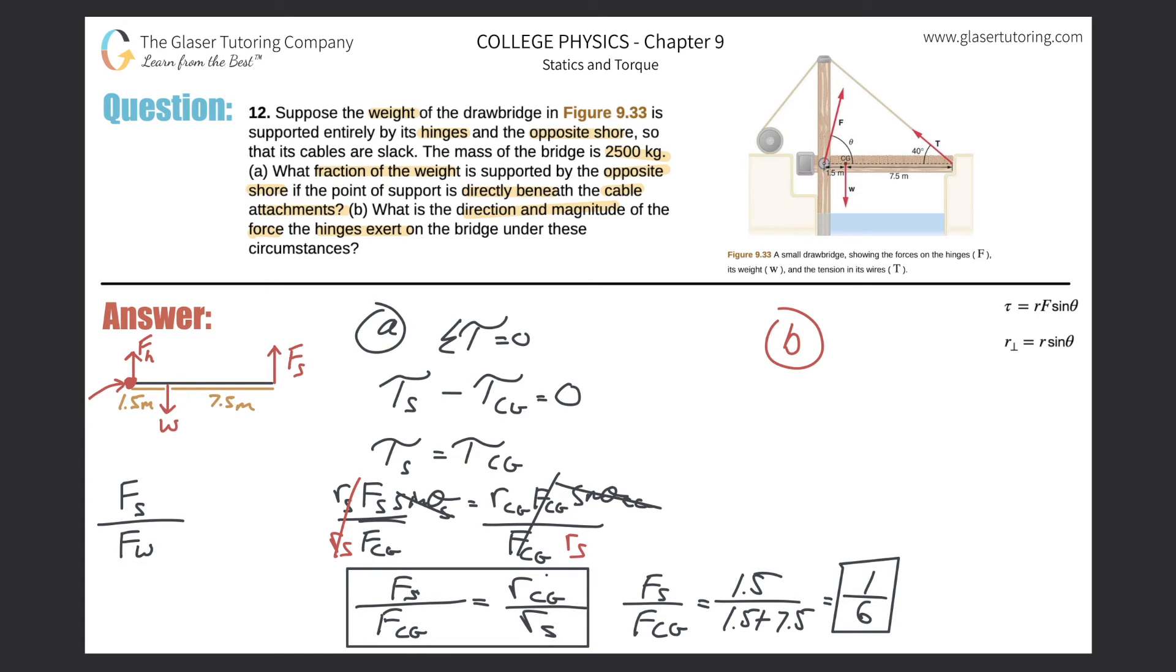just like the force that the shore exerts will be, is also directly upwards. It's a little confusing with this picture from the text because you got vectors all over the place, but those have nothing to do with the problem. Alright. At least for this one, probably coming up in the next question or something. So in any case, if you know 1 sixth of the total weight, right, is being supported by the shore,